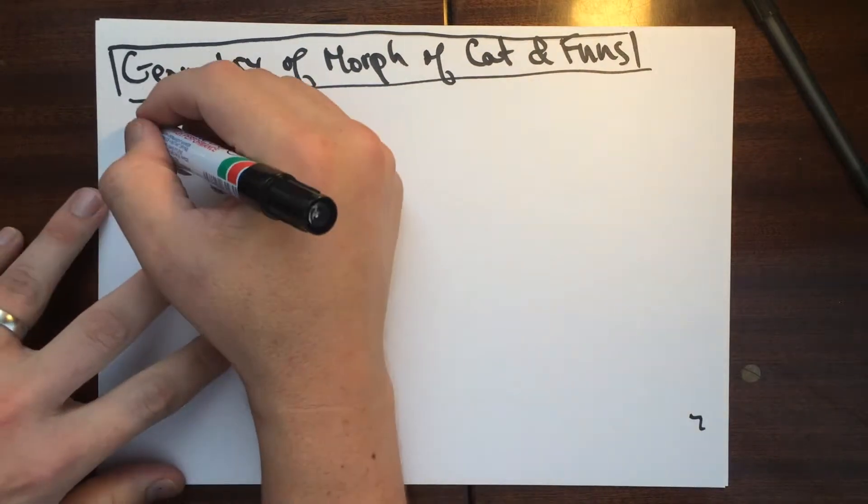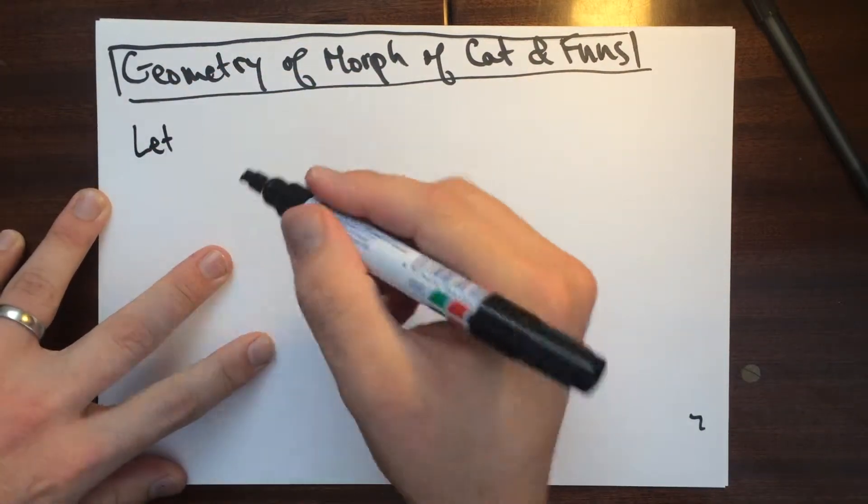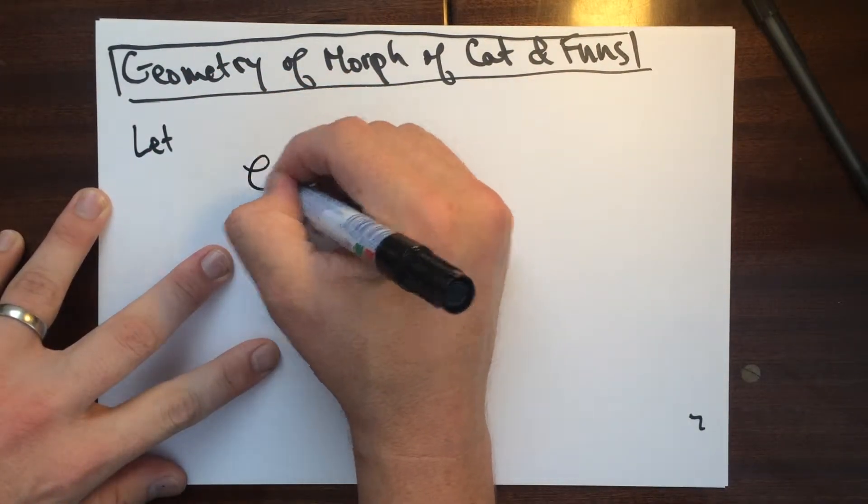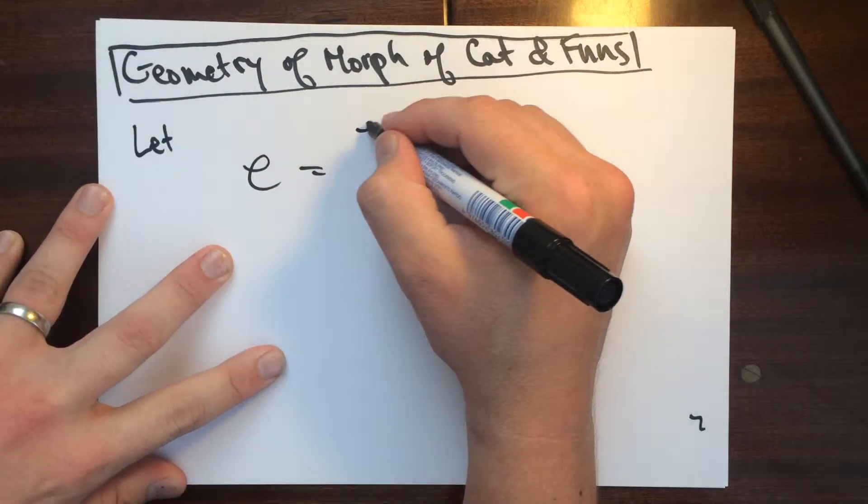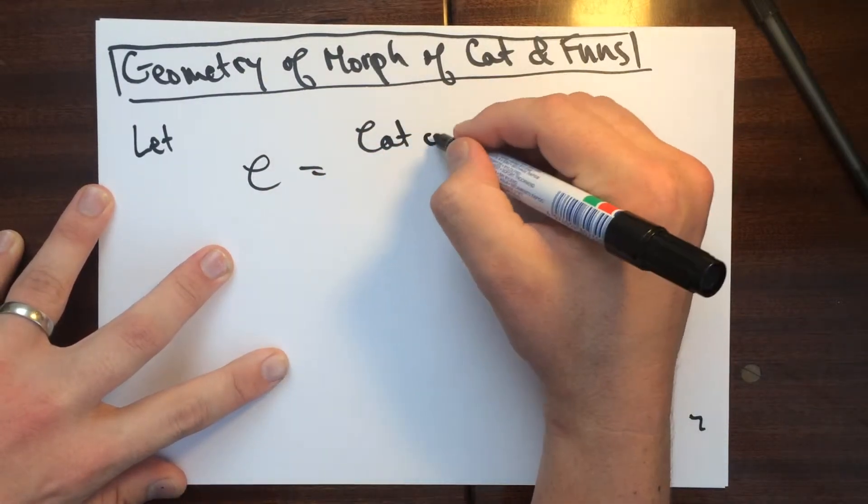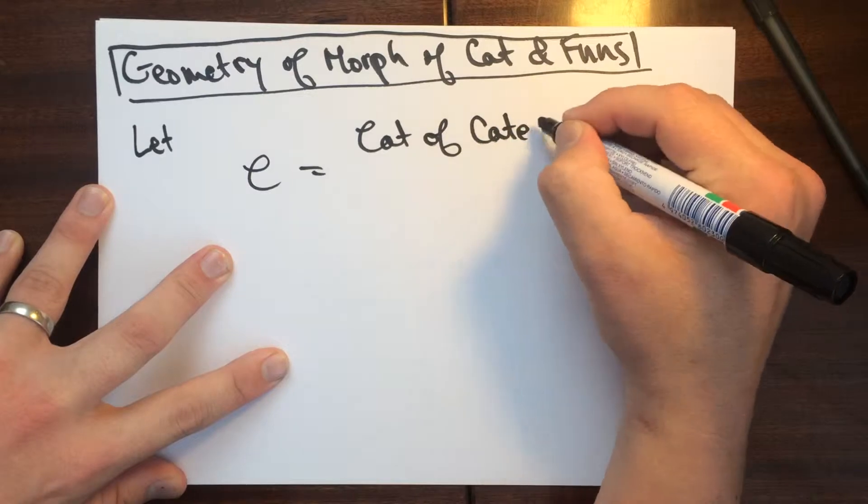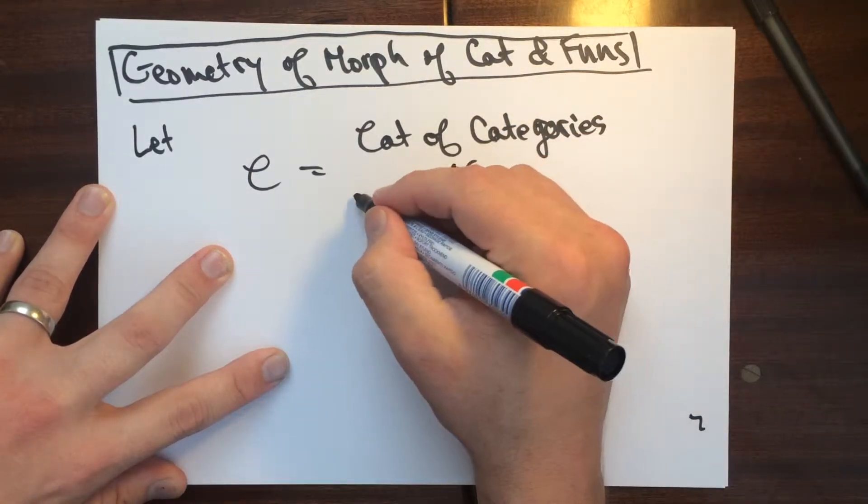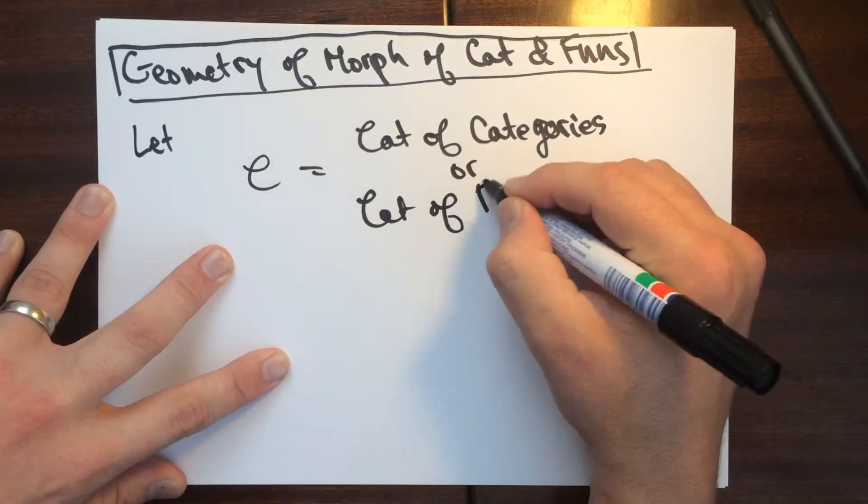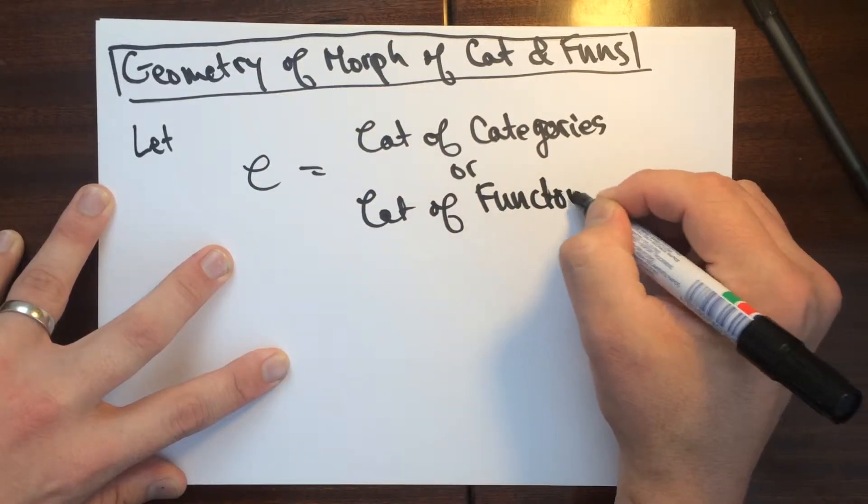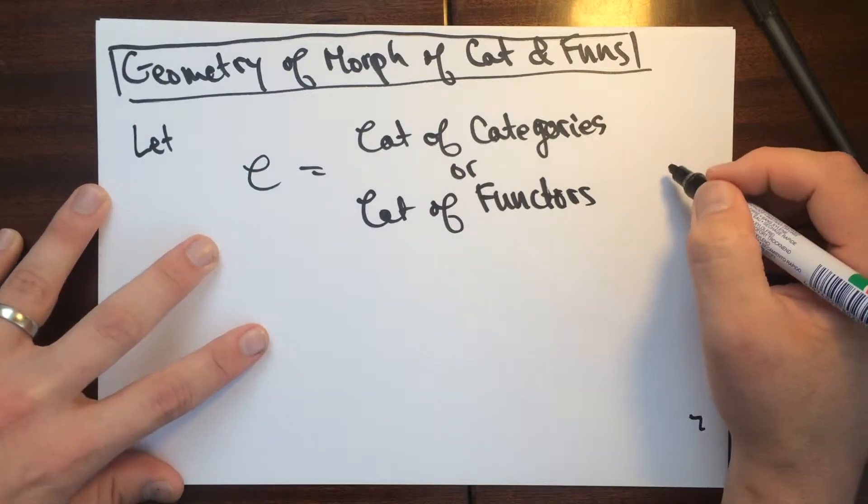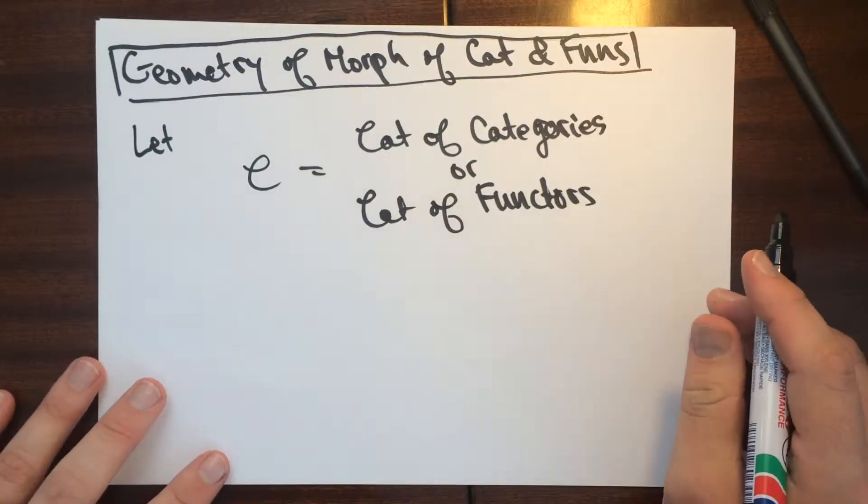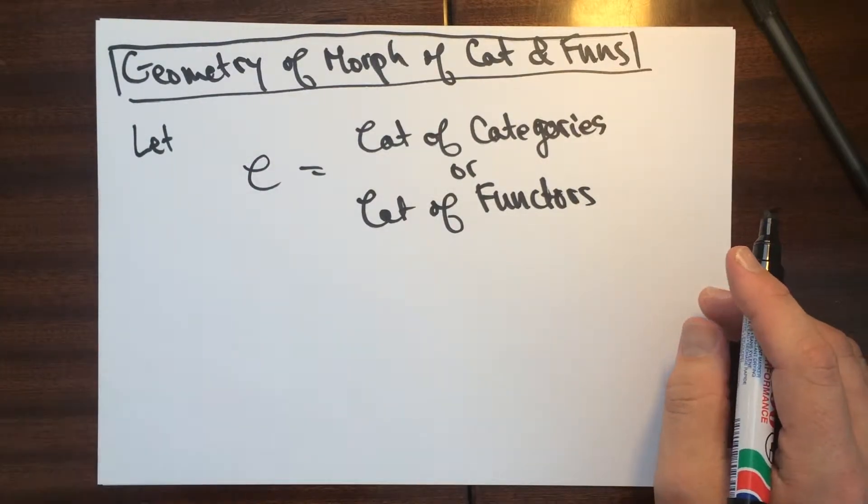In this video, what we're going to do is we're going to let C be the category of categories, or it's going to be a category of functors. This is going to correspond to the algebraic spaces case. This is going to correspond to the stacks case, the algebraic stacks case.